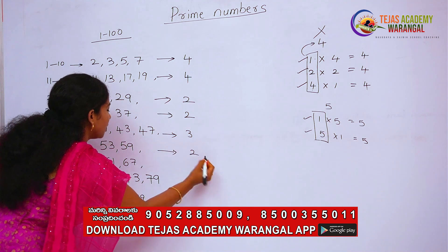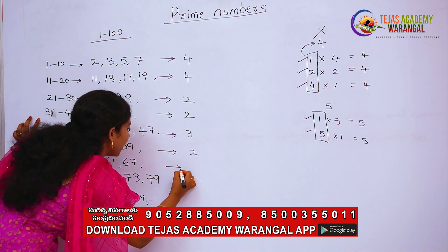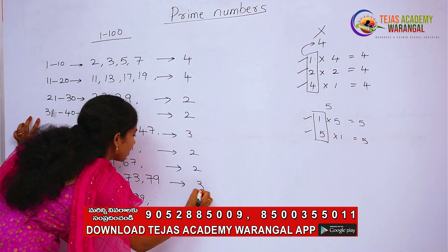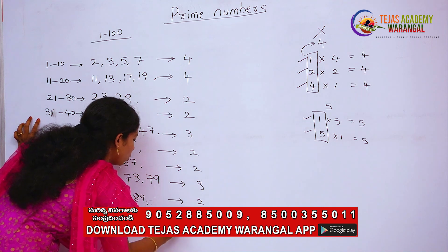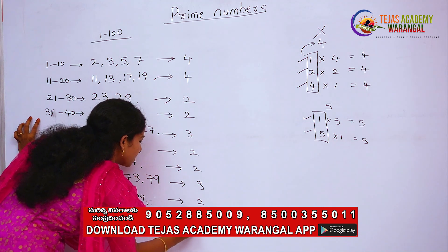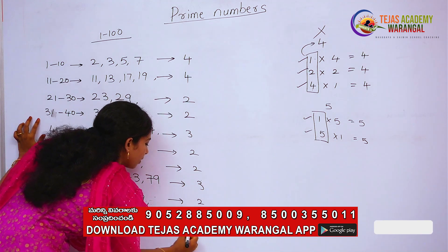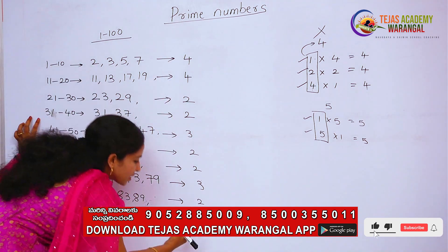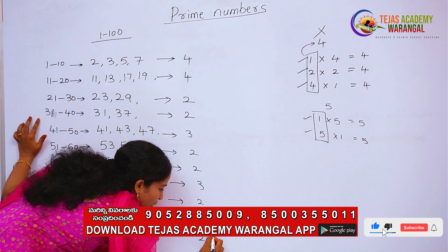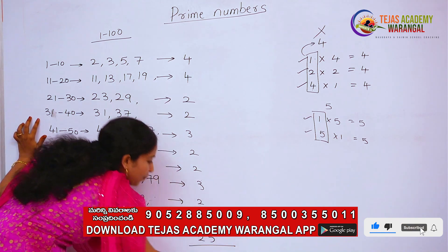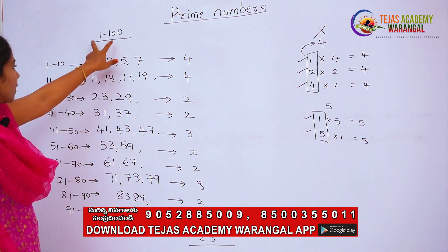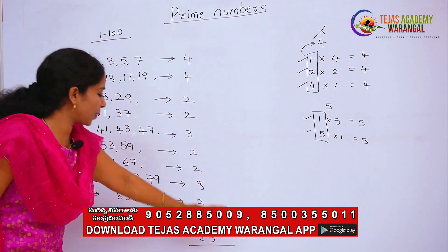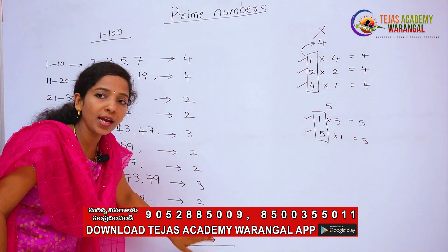Continuing the pattern: 51 to 60 gives 2, 61 to 70 gives 2, 71 to 80 gives 3, 81 to 90 gives 2, 91 to 100 gives 1. Adding all of these up, you have to memorize 25 numbers in total — there are 25 prime numbers from 1 to 100.